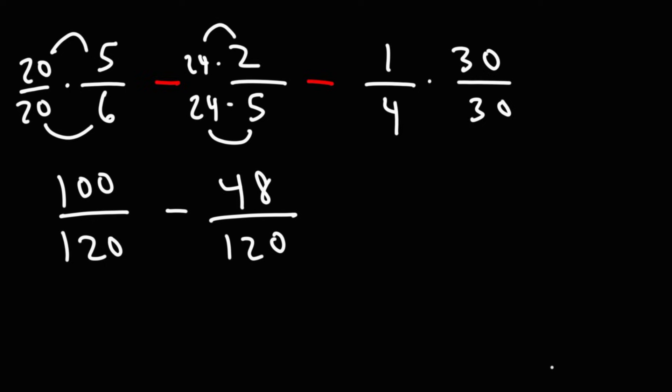By the way, when you use this method, the denominator of each three fractions will be the same. 30 times 1 is 30. 4 times 30. 4 times 3 is 12. Add the 0, you get 120. So as you can see, we have the same denominator.